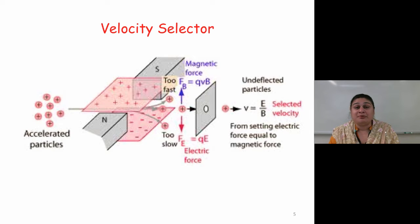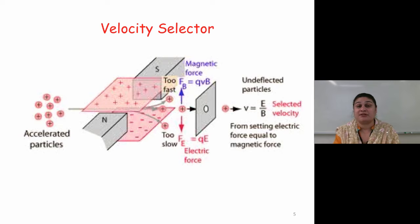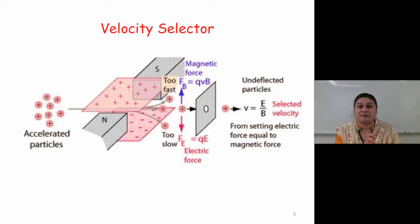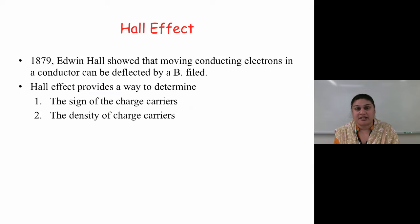One place where it becomes very useful is in velocity selectors — for example, you saw that in the mass spectrometer, where the velocities of different particles were selected. Another place where it becomes really effective is called the Hall effect.